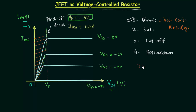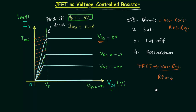In the ohmic region, JFET can be used as a variable resistor. This means we can increase or decrease the resistance using the voltage VGS — the controlling voltage. So if we vary VGS, we can also change the resistance of the junction field effect transistor, and in this way we can use it as a voltage controlled resistor.